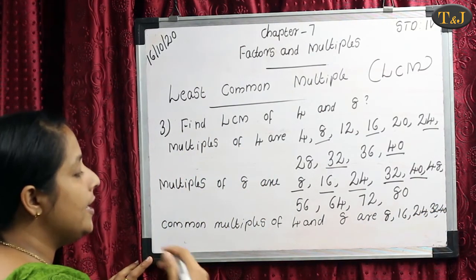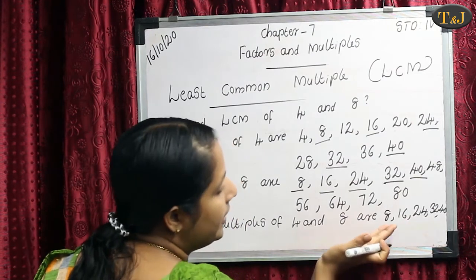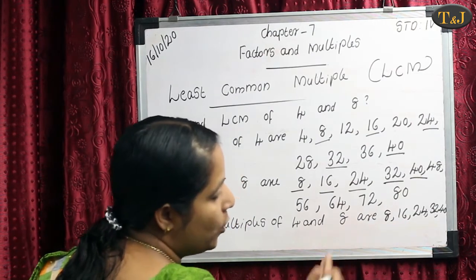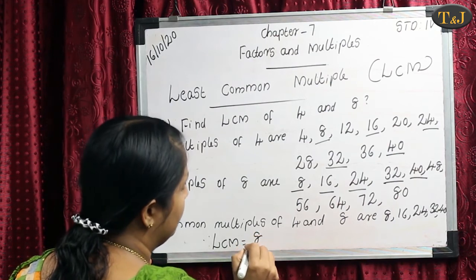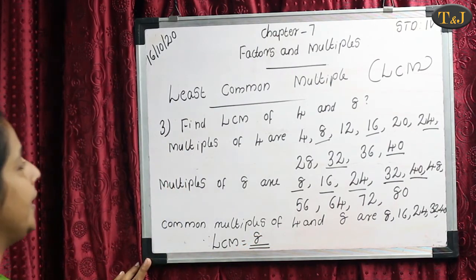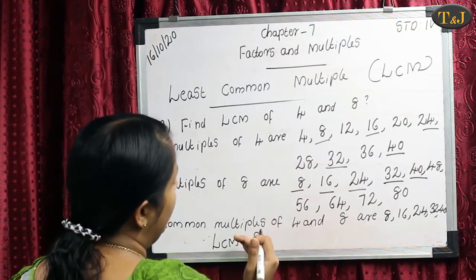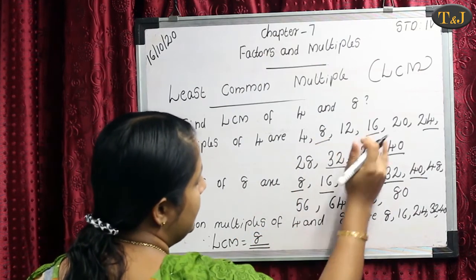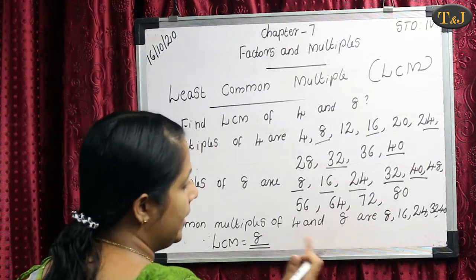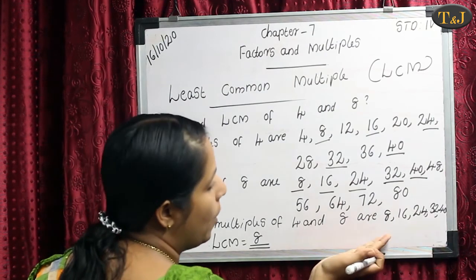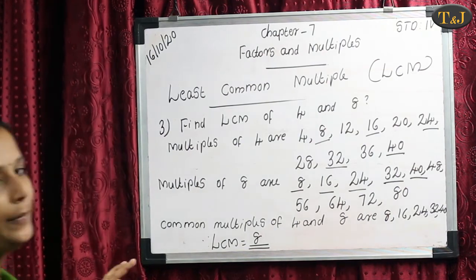Next we find out the least common multiple. When we are selecting the common multiples, the least common multiple means which is the smallest number here — and that is 8. Therefore our LCM equals 8. To summarize: find the 10 multiples of 4 and 8, find the common multiples (8, 16, 24, 32, 40), and the smallest is 8. Therefore LCM equals 8.